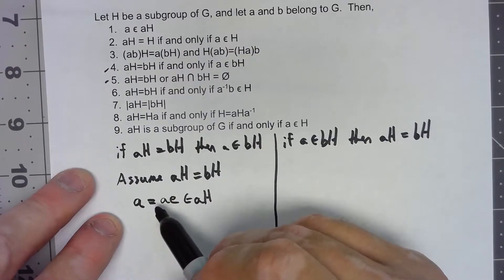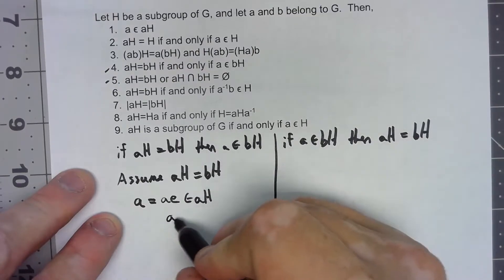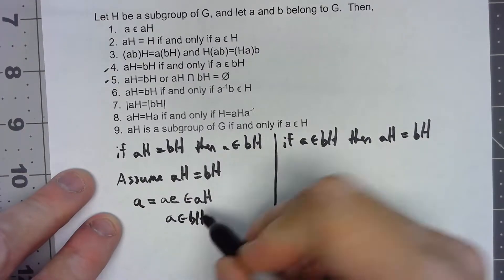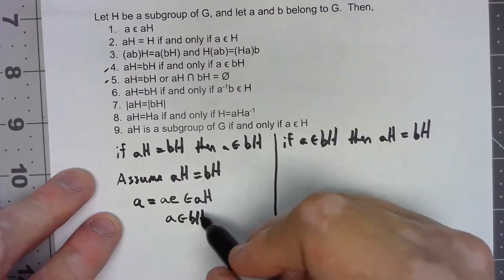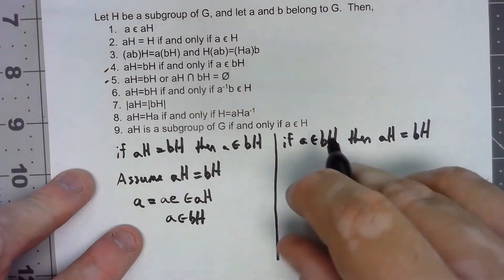But then that says that A is in BH because AH and BH are the same thing. So if AH equals BH, A has to be in BH. Very simple.